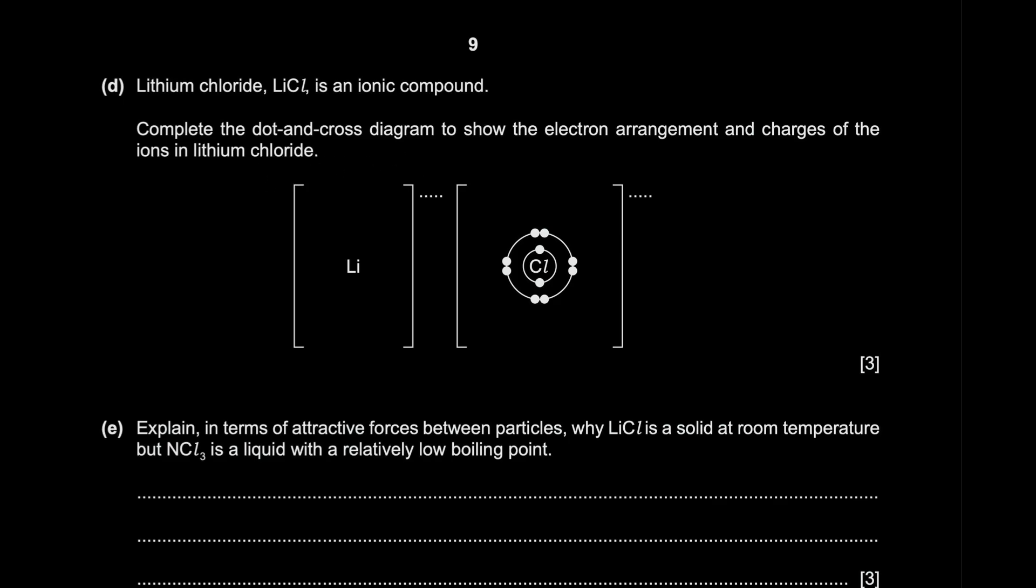Complete the dot and cross. A lot of people get dot and crosses wrong. So over here, lithium's lost its electron. So people just leave this. And what you should realize is they want you to show the inner electron. So we'll draw that and the dots are already taken by chlorine. So we'll give it the next best thing. Crosses. It has two electrons in its inner shell.